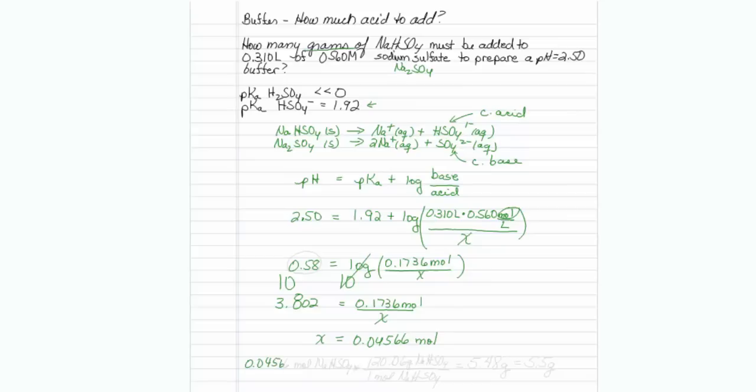0.04566 moles of sodium hydrogen sulfate times, in one moment I will figure out the molar mass, NaHSO4, and that would be 120.06 grams of my sodium hydrogen sulfate.